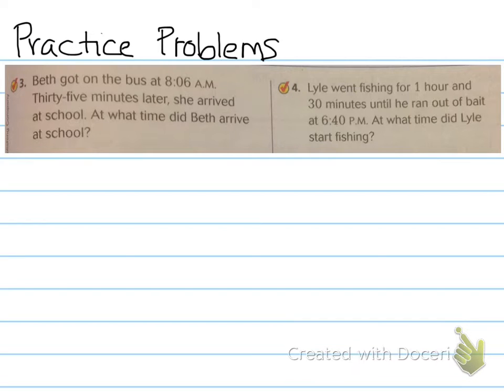So there's two practice problems. Beth got on the bus at 8:06 AM. 35 minutes later, she arrived at school. What time did Beth arrive at school? So again, this one, you're jumping ahead in time. Right? Later is our key word. The second practice problem. Lyle went fishing for one hour and 30 minutes until he ran out of bait at 6:40 PM. At what time did Lyle start fishing?